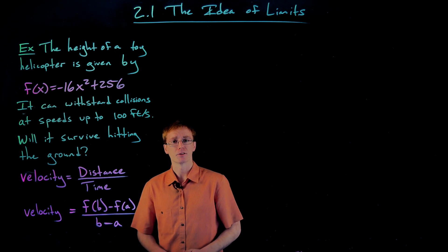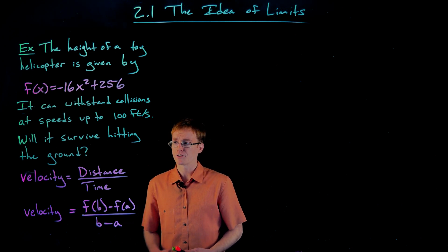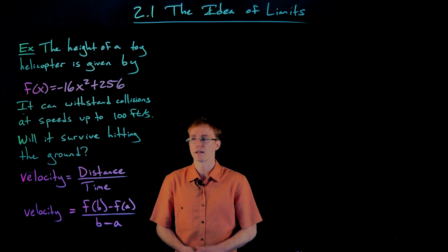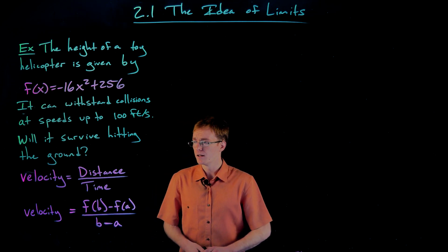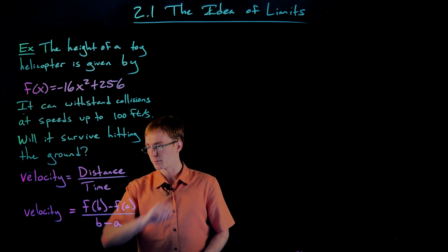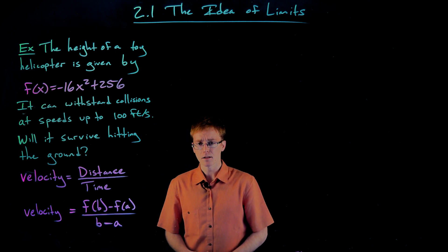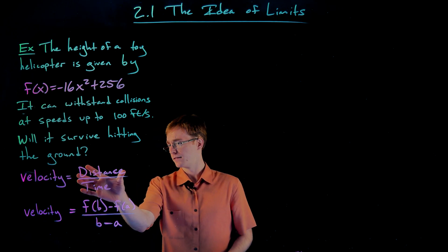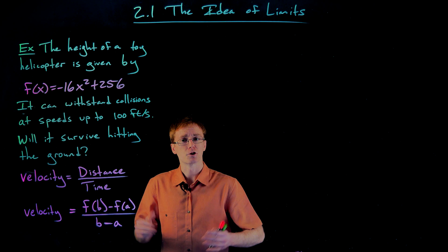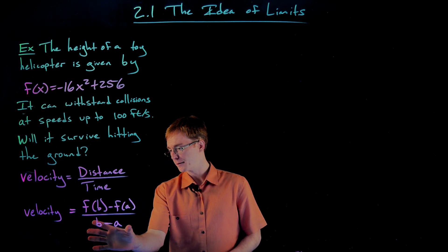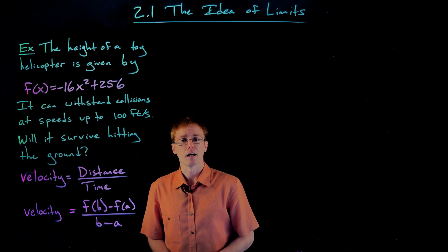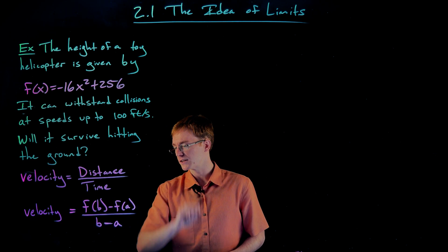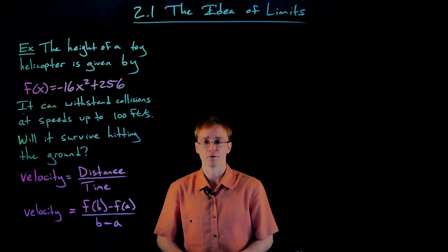I have a couple of equations written down here that will help us. One is that velocity equals distance divided by time. Velocity and speed are technically different quantities, but for now we'll use them interchangeably. Another way to write that distance over time formula more algebraically is f of b minus f of a over b minus a. The numerator represents the distance traveled over some time interval, and the denominator b minus a represents the time interval of interest — final value minus initial value.